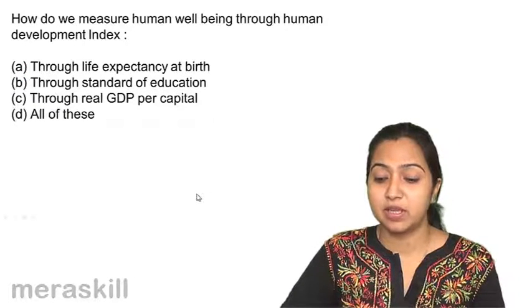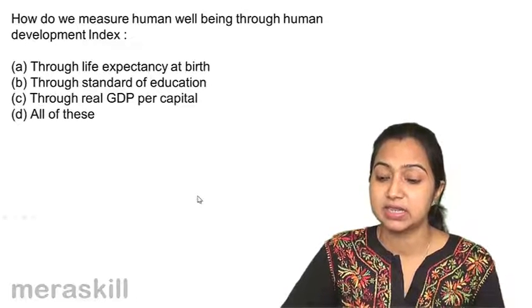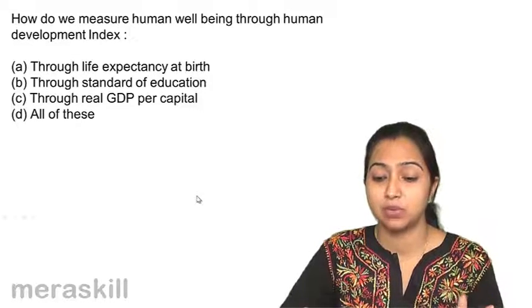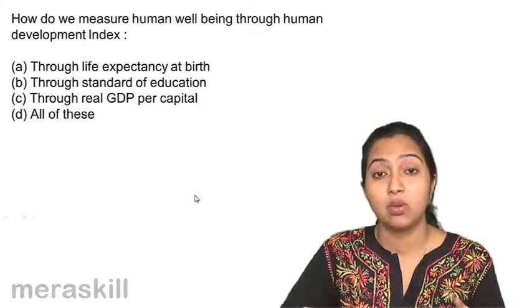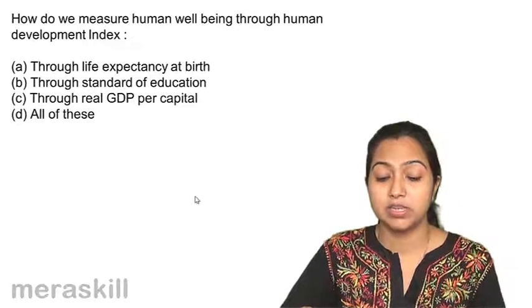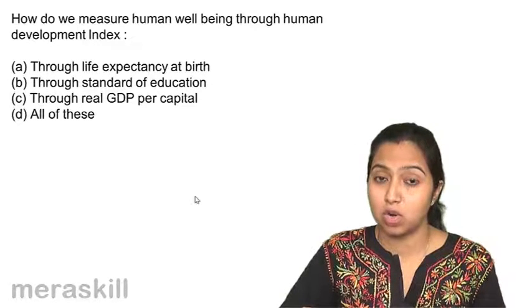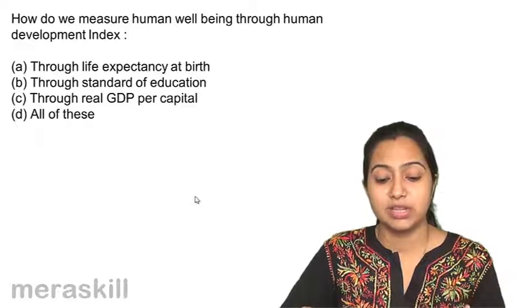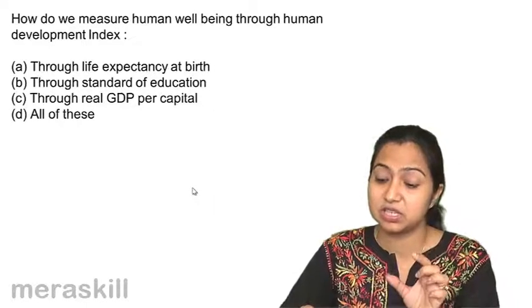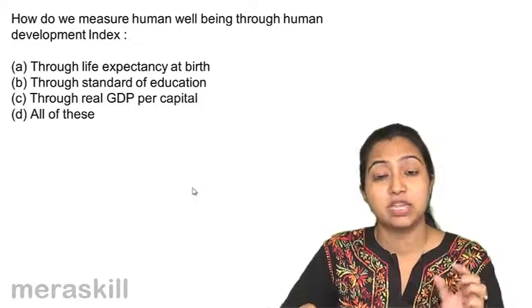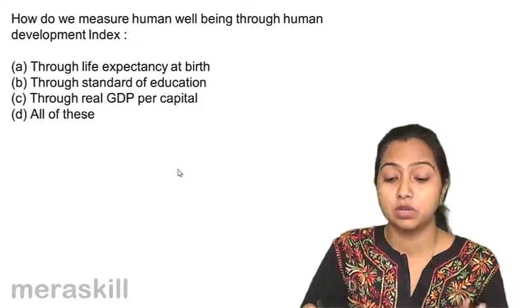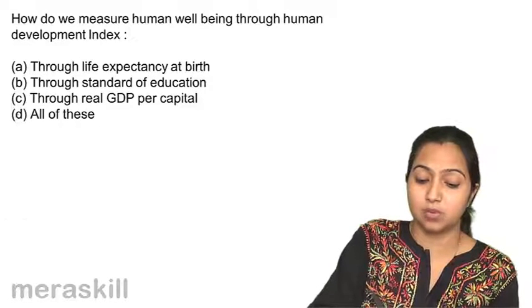How do we measure human well-being through Human Development Index? HDI, which was measured by UNDP, United Nations Development Programme. They measured the human well-being. And what were their indicators? Remember their indicators? They were longevity, education or knowledge and standard of living. Through life expectancy at birth, which becomes a part. We do not only see life expectancy at birth, but it is a part of longevity. And through standard of education or knowledge and through real GDP per capita. So, all these factors are very important to measure human well-being. All of these.